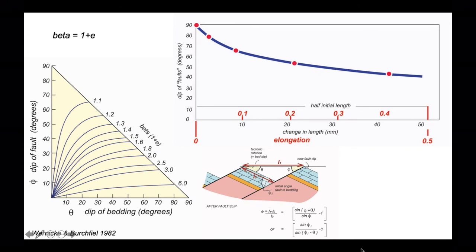Let's plot our numbers up on the graph. The faults initiate at 90 degrees when the top of our CDs was zero, and they run down the axis like this. You can see that we finished our experiment when the stretching factor was 1.4. This model demonstrates the viability of the Wernicke and Birchfield model quite nicely.